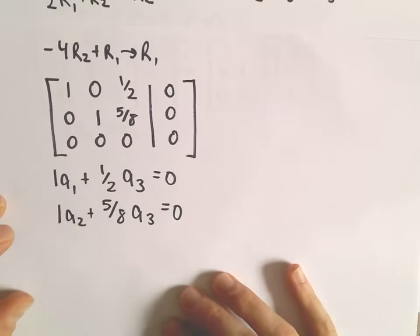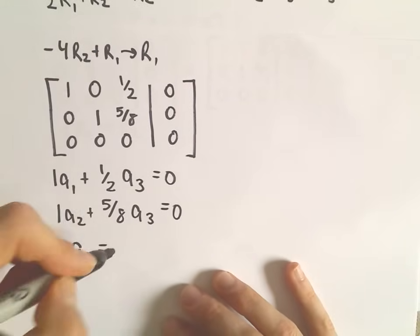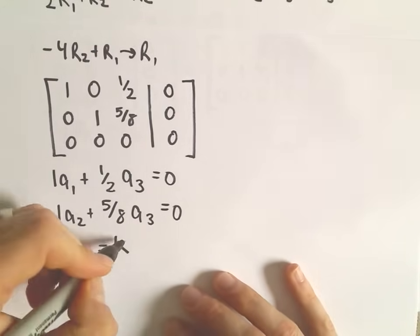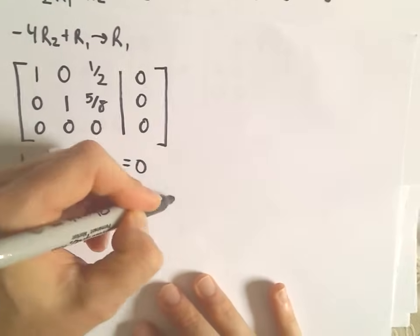And then our last variable, our last scalar, a sub 3. That's going to be our free variable. And we can just set that equal to some number k. So if we set that equal to k, if we backtrack now.